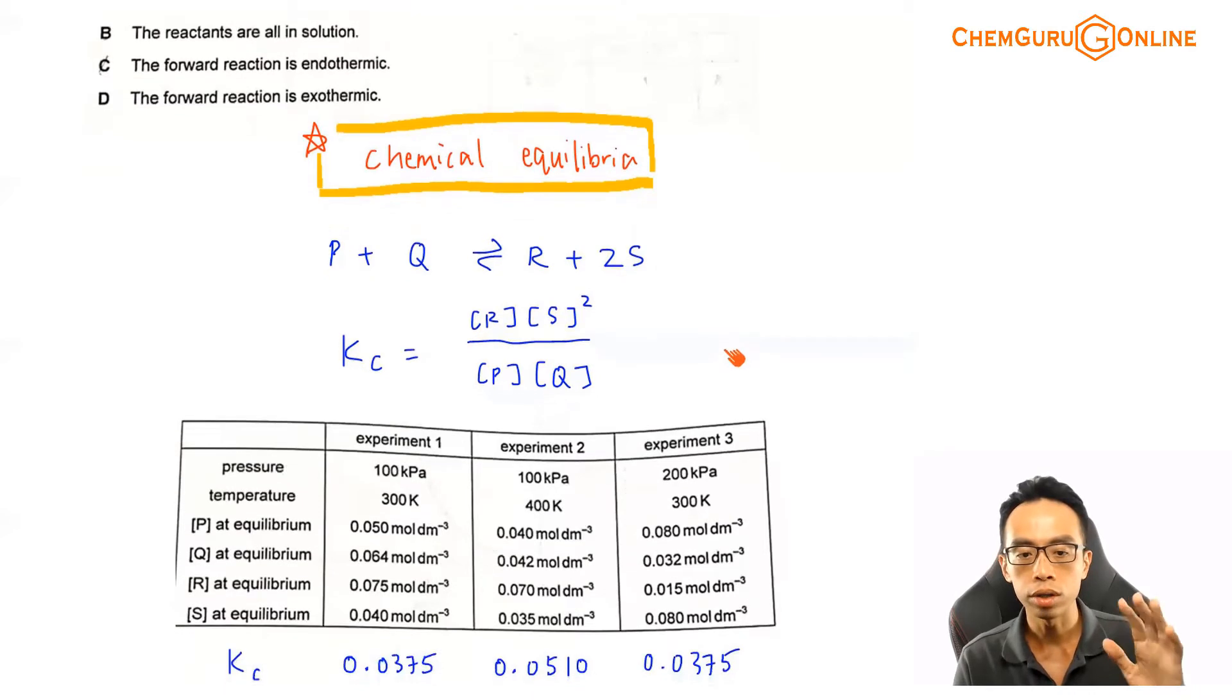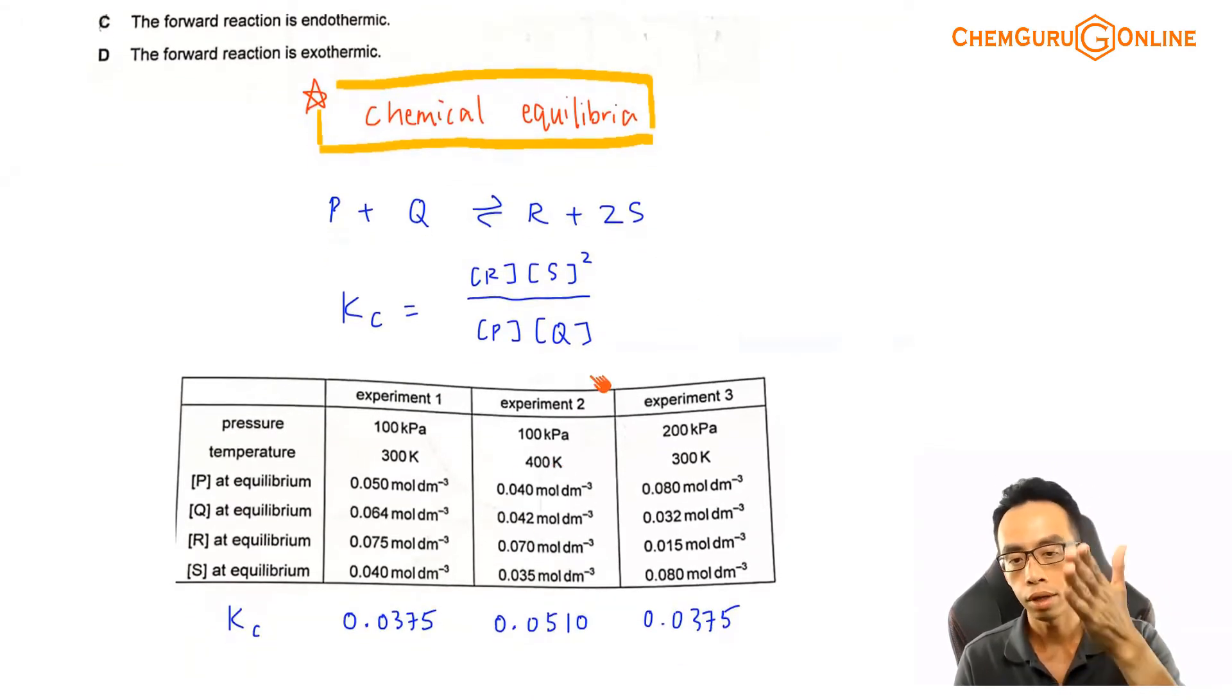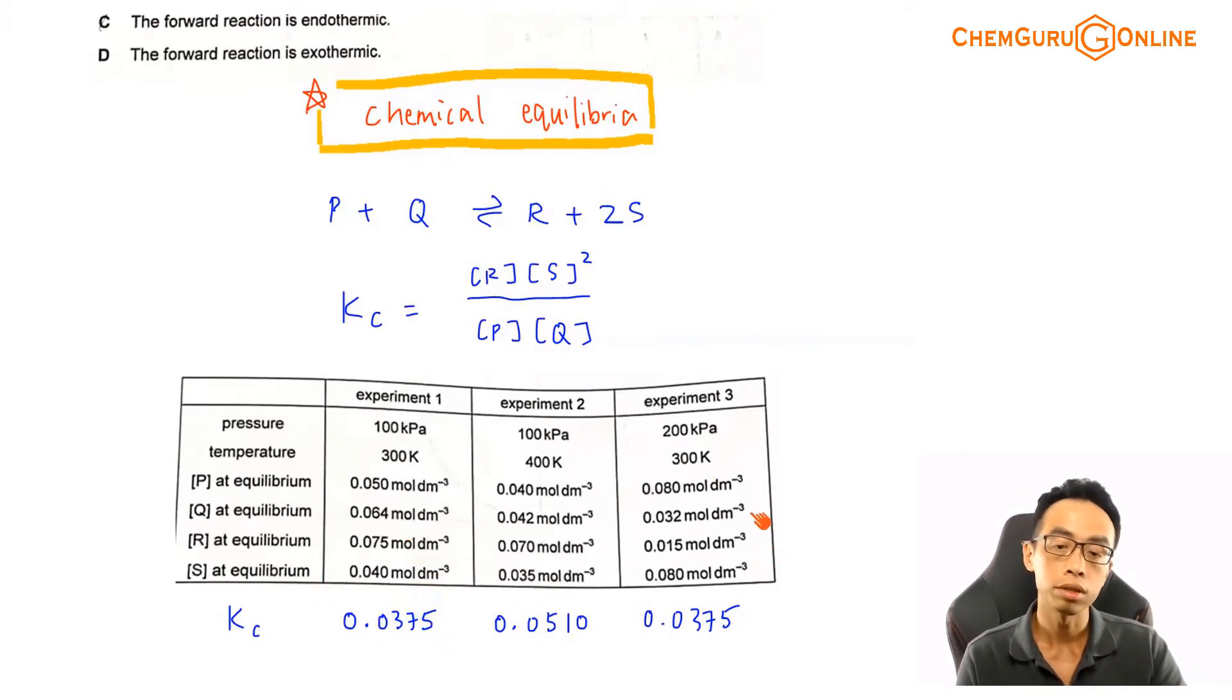My equilibrium constant K in terms of concentration would just be the concentration of the product raised to the power of the coefficient divided by the concentration of my reactant raised to the power of my coefficient. So this would be concentration of R power 1, concentration of S squared, divided by concentration of P and concentration of Q. Based on the information given in the question, experiment 1, 2, and 3, I can actually calculate the KC for each of these experiments. I'll just give you the outcome here. The KC for experiment 1, we can calculate this to be 0.0375. The KC for experiment 2 is 0.0510. We notice that this is a different value.